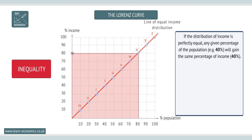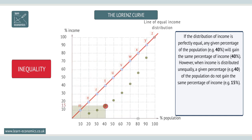However, when the income is distributed unequally, a given percentage — say 40% — does not gain the same percentage of income; in the graph this is shown as only 15%.